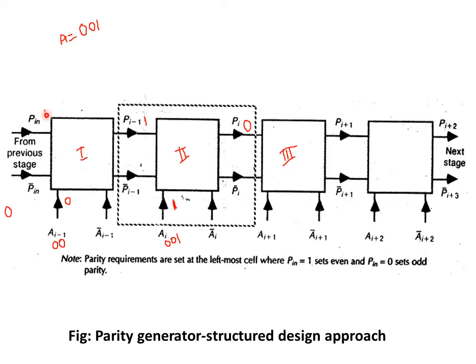What happens if we apply these particular inputs? Let us apply 0 initially. The first bit of a is 0, applied to the previous stage of block 1 — that is ai minus 2. Now ai minus 2 is holding value 0. How is the parity output calculated? It depends upon the number of 1s present at the particular input.